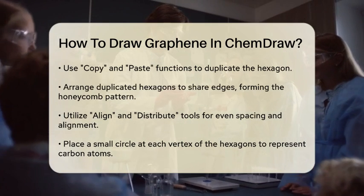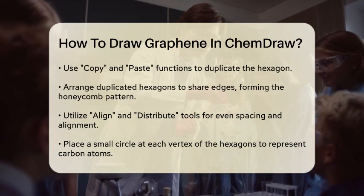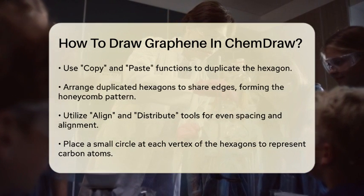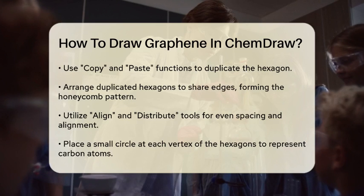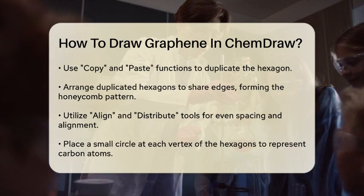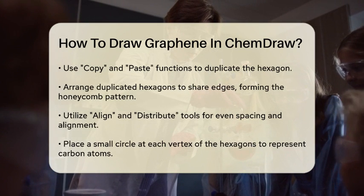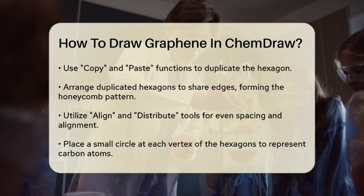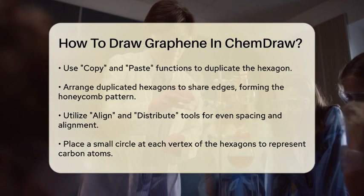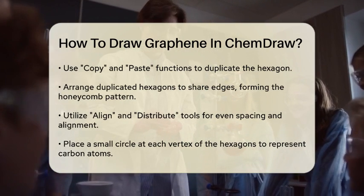Next, you will need to replicate this hexagon to create the honeycomb pattern characteristic of graphene. Select the hexagon you just drew and use the Copy and Paste functions to duplicate it. Arrange the duplicated hexagons so that they share edges, forming the continuous lattice structure. You can also use the Align and Distribute tools to ensure that the hexagons are evenly spaced and properly aligned.